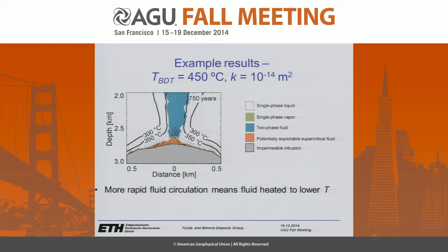If we keep the brittle-ductile transition temperature at 450 degrees Celsius but increase the host rock permeability by an order of magnitude, the dimensions of the supercritical fluid resource are much lower and more restricted, just to the top of the intrusion. This is a consequence of the fact that the higher host rock permeability allows for much more rapid fluid circulation near the intrusion, meaning that in the process of being heated and upflowing away from the intrusion, the fluid does not pick up as much enthalpy and is not heated to as high a temperature.